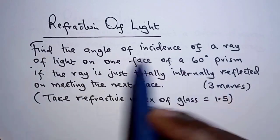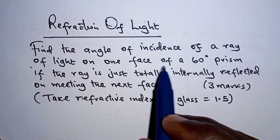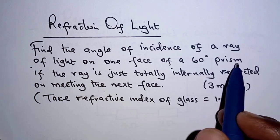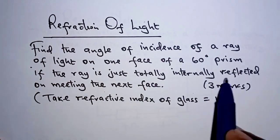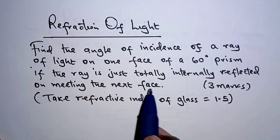Find the angle of incidence of a ray of light on one face of a 60 degree prism if the ray is just totally internally reflected on meeting the next face.